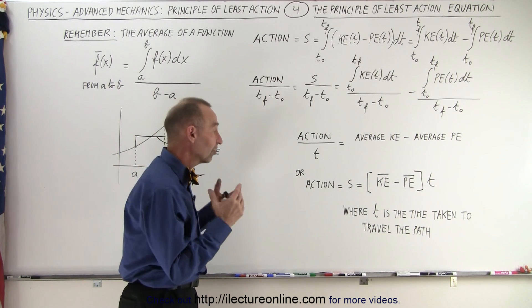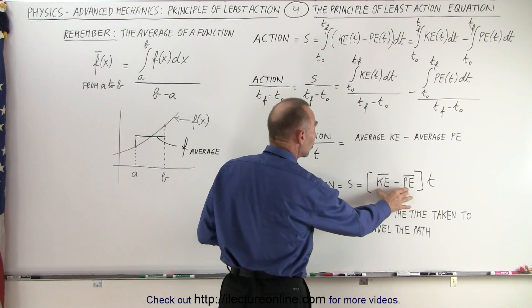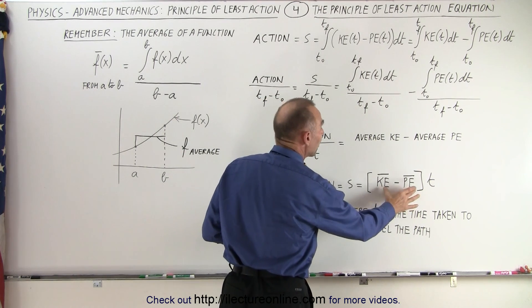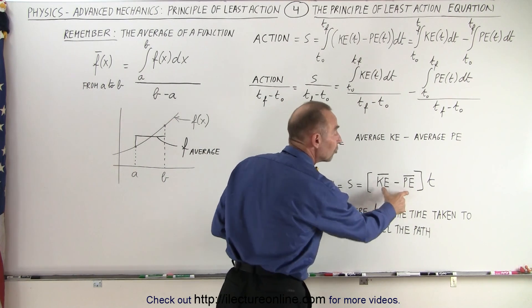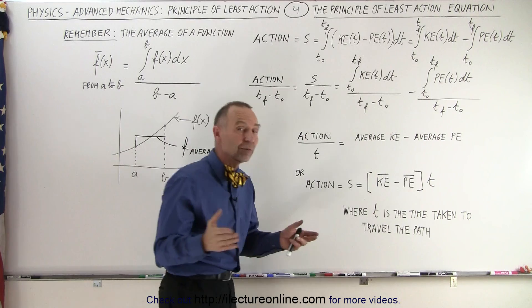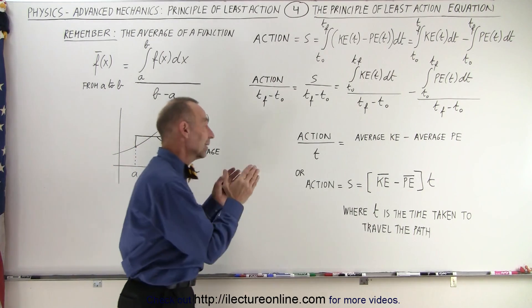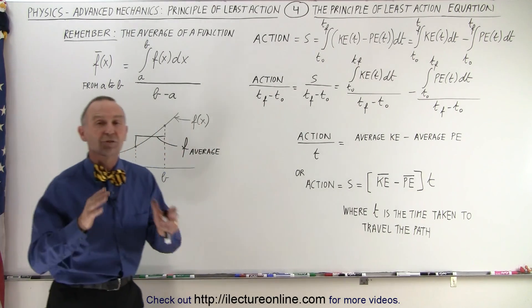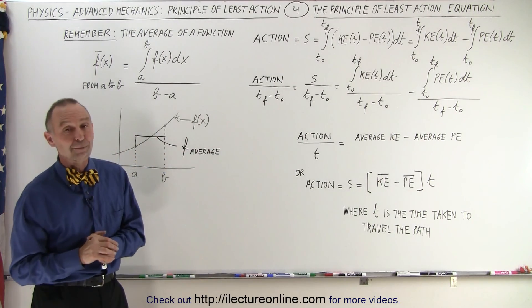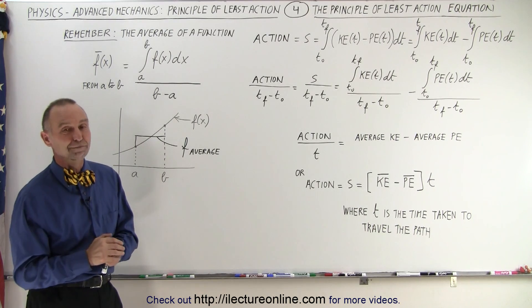Essentially, to find the path of least action, we find the path where the difference between the average kinetic energy and the average potential energy is a minimum. And that is how it's done.